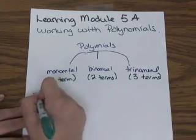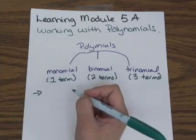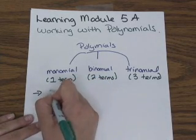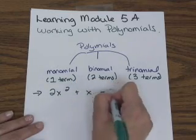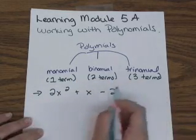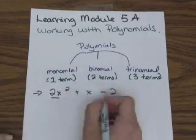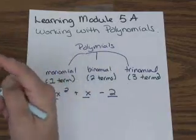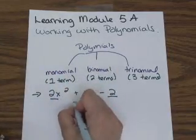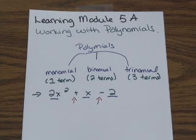Terms are separated by plus and minus signs. For example, this is a trinomial — there are three terms. This is one, this is the second, and this is the third. Notice that each term is separated by plus and minus signs. That's how you're able to count how many terms are in your polynomial.